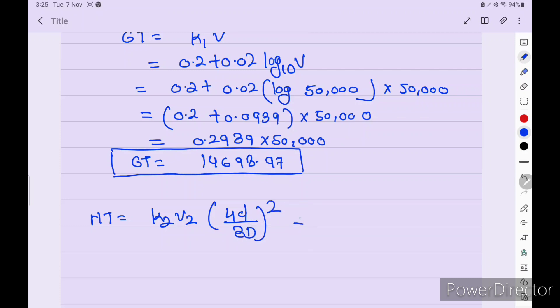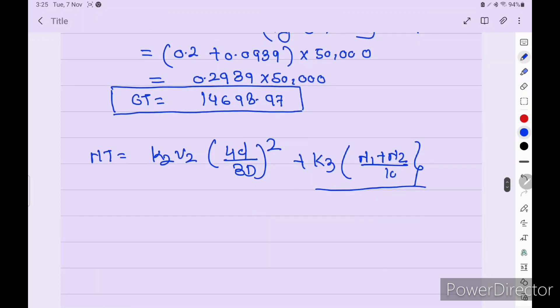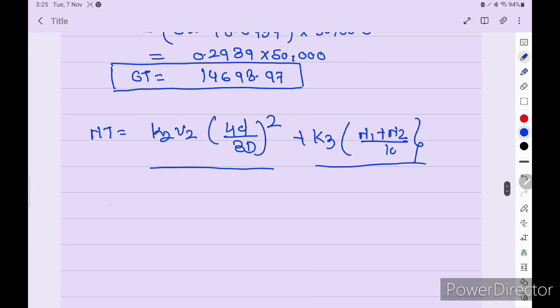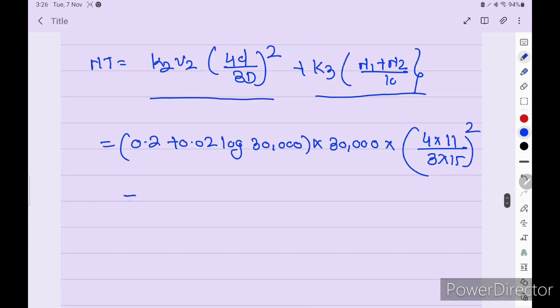Now for NT, equals k2 into V2, 4d upon 3D squared, plus k3 N1 plus N2 upon 10. This is not applicable because this is passenger vessel passenger space and there is no value given for the passenger, so we have to solve this only. Therefore, 0.2 plus 0.02 log 30,000, into V 30,000, into 4 into draft 11, divided by 3 into depth 15 squared. So we get the NT net tonnage value is 8,304.076.